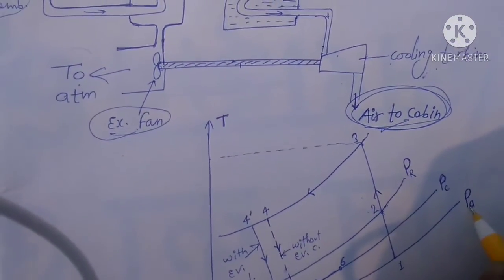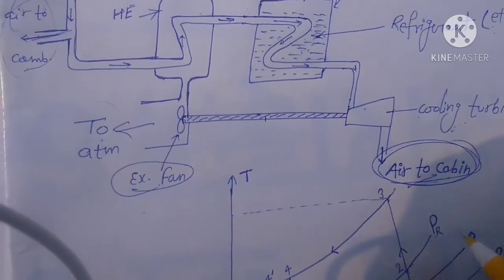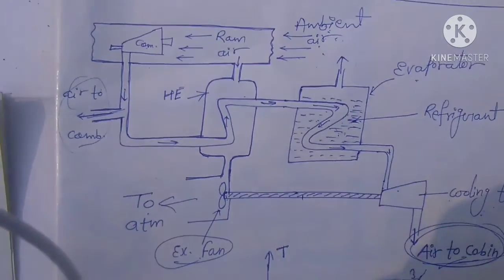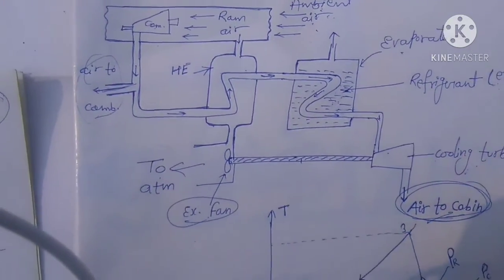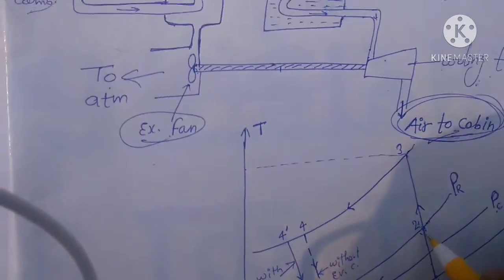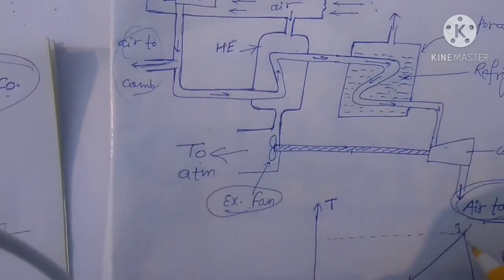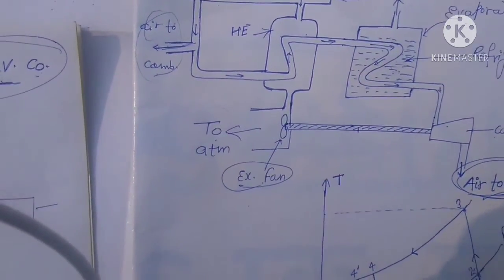First to second is ambient pressure to cabin pressure. You see here the ram ramming pressure, one to two. Two to three is the main compression pressure.